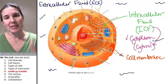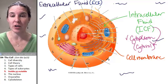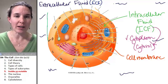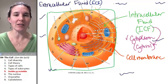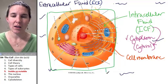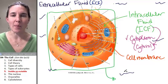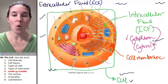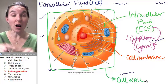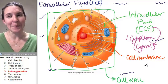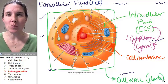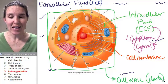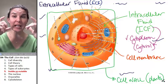Some cells have an additional structure on the outside. I'm going to draw it like this, even though this cell does not have it. This is my example of a cell wall. Not all cells have cell walls. Plants have cell walls, animals do not.